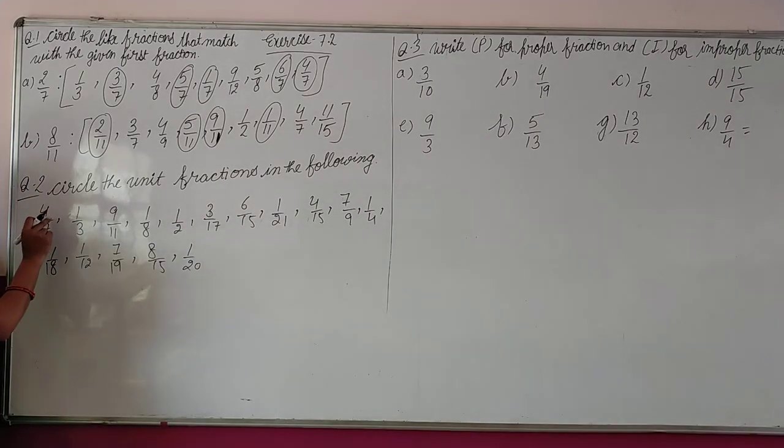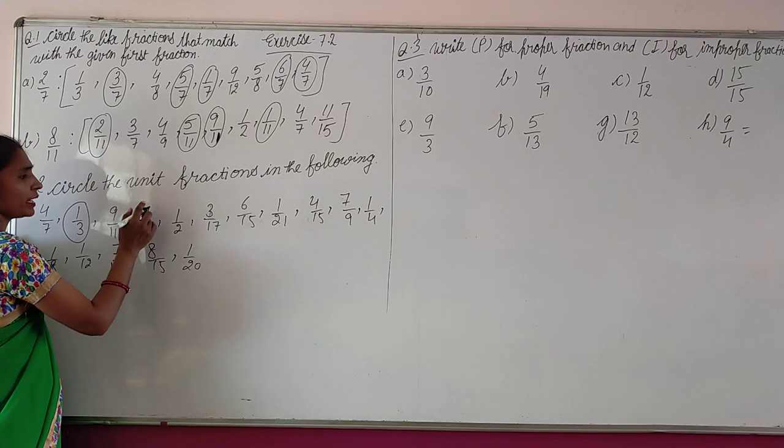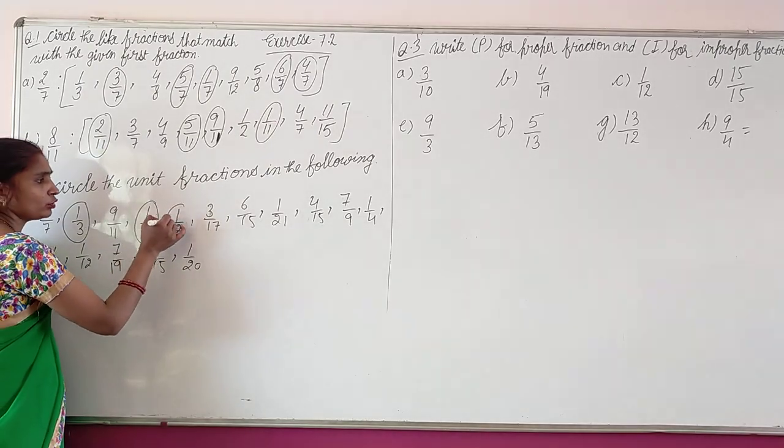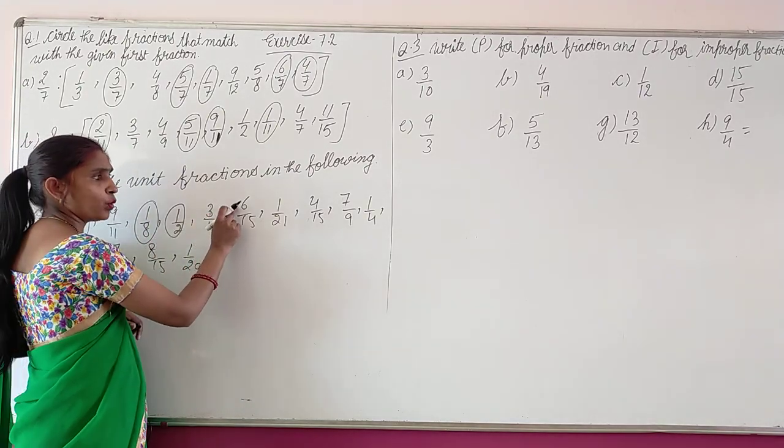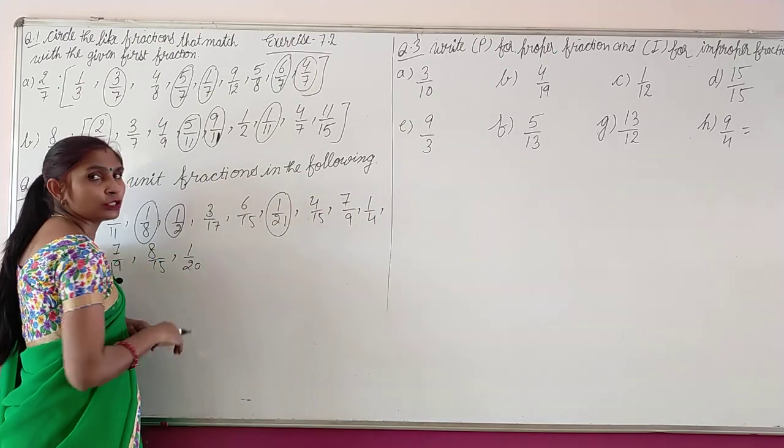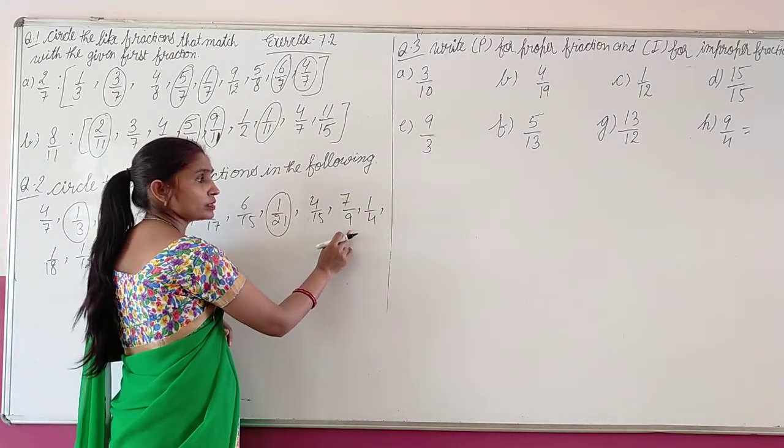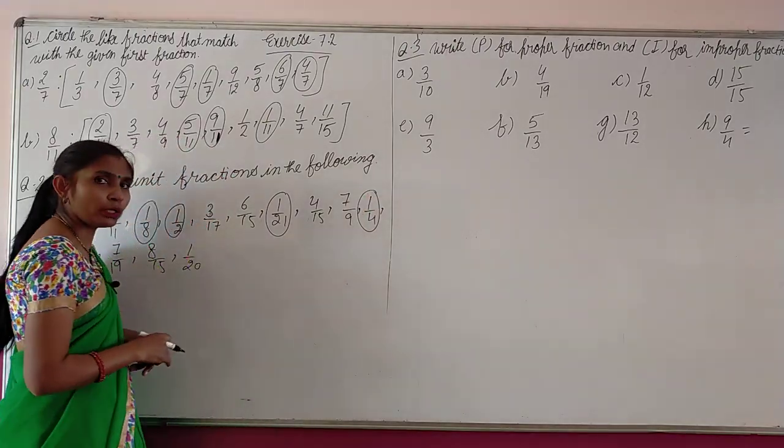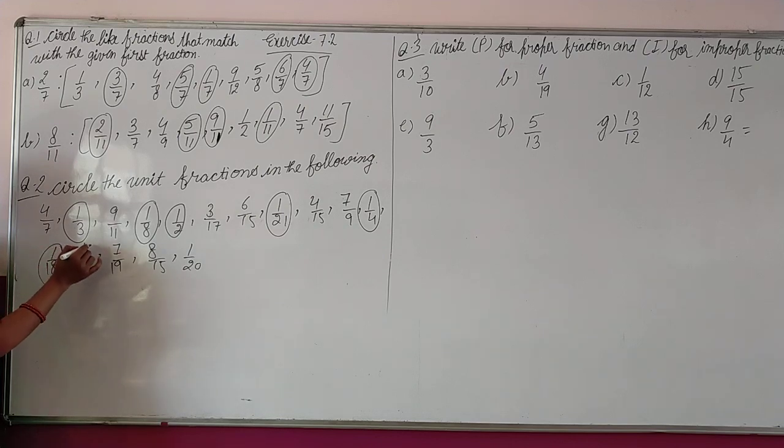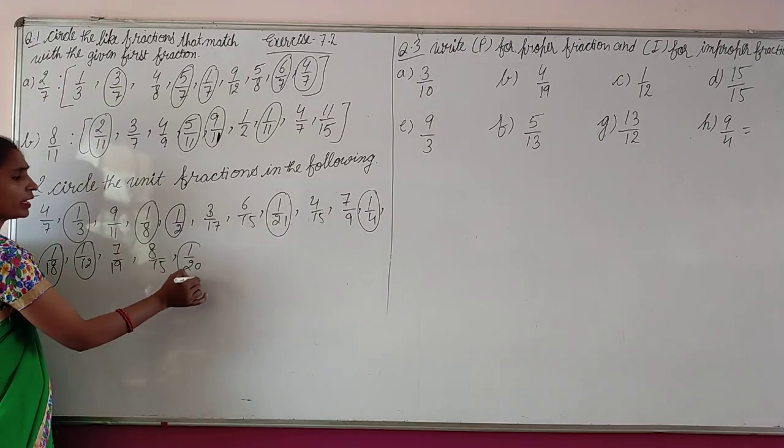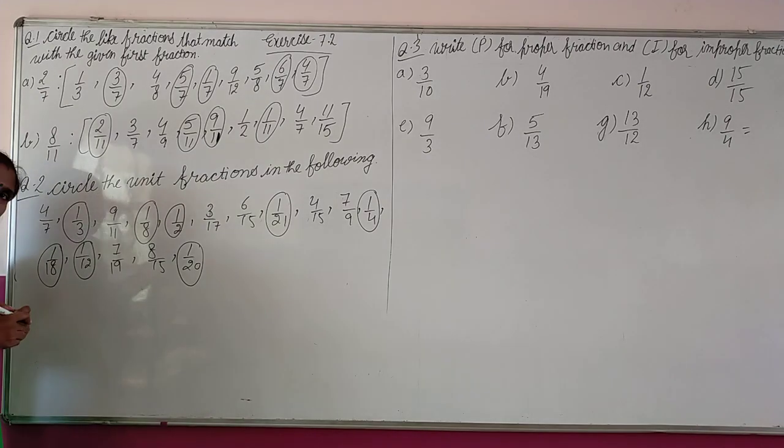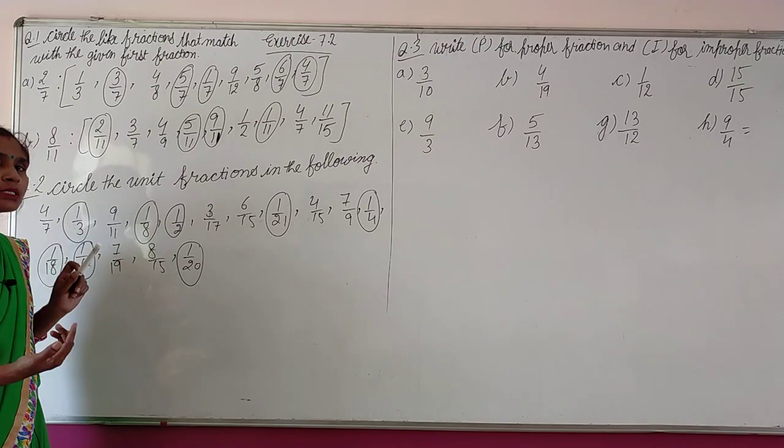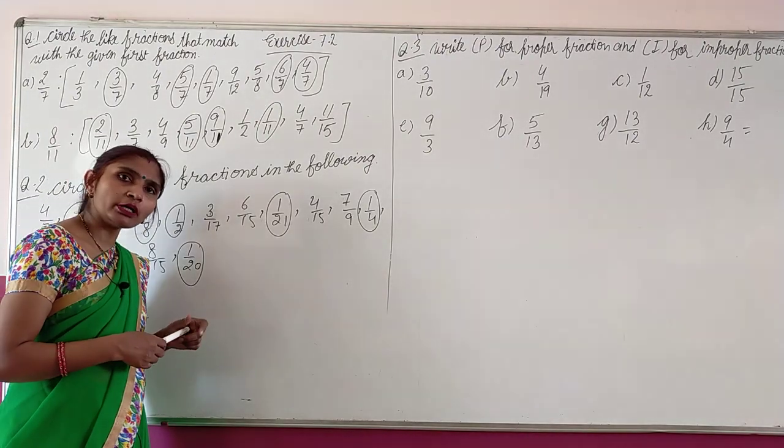4 by 7 mein numerator 4 hai, unit fraction nahi hai. 1 by 3 mein numerator 1 hai, toh ye unit fraction. 9 by 11 no, 1 by 8 yes. Kyonki numerator kya hai? 1. Then 1 by 21 unit fraction, 4 by 15 no, 7 by 9 no, 1 by 4 is also unit fraction, 1 by 18 yes, 1 by 12 yes, 7 by 19 no, 8 by 15 no, and 1 by 20. So unit fractions are those fractions that are having 1 as numerator.